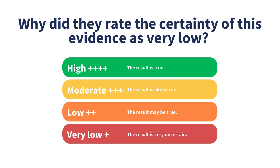Why did they rate the certainty of the evidence as very low? They had serious concerns about imprecision, so the certainty of the evidence went down by two levels from high to low. The findings were based only on one small study with 60 people, and very few of them got better. Then the authors had some concerns with how the study was conducted and thought the study could be biased, so they went from low certainty to very low certainty. This is how judgments are made about whether a result is true — it's an important part of making conclusions about the most important results from a systematic review.